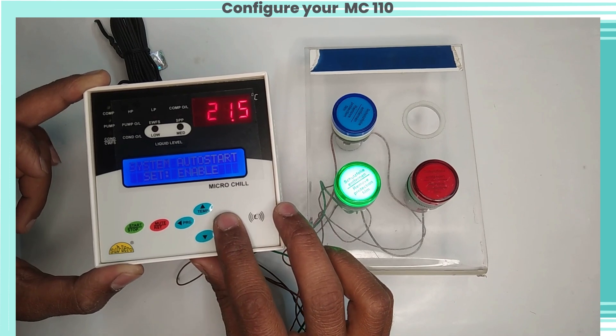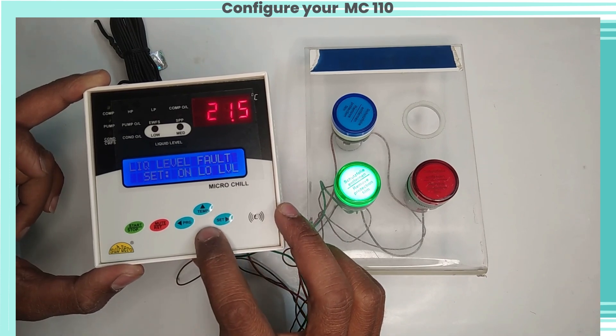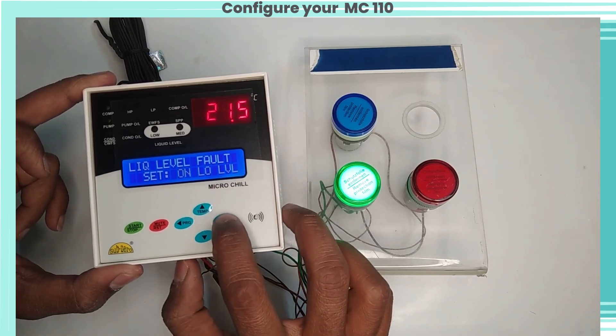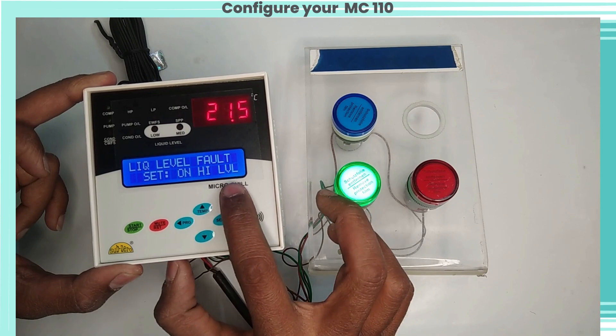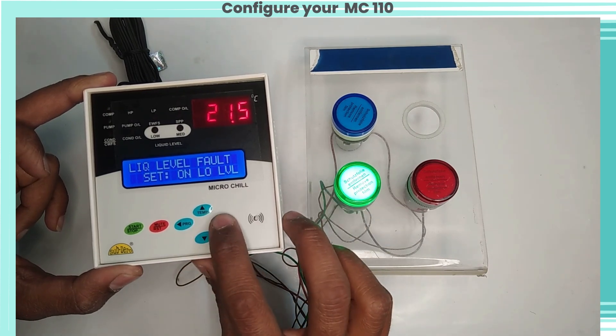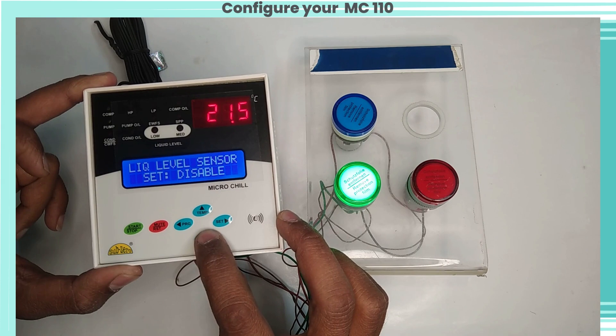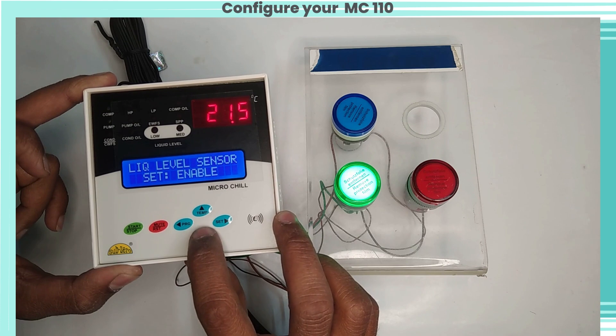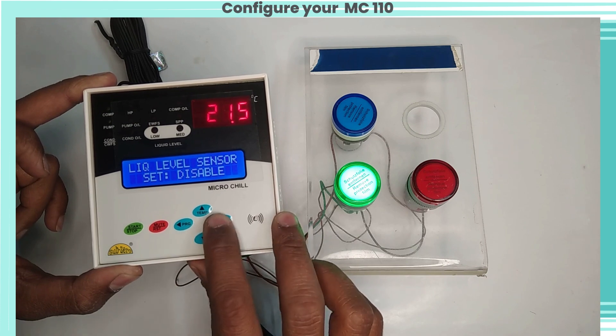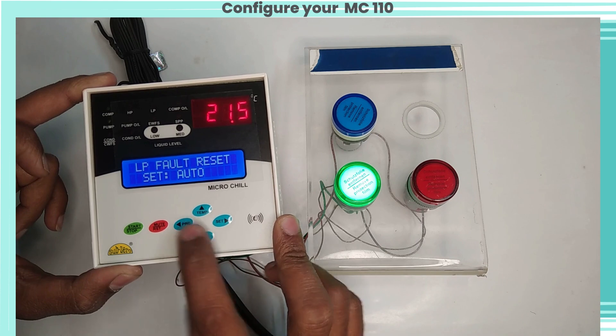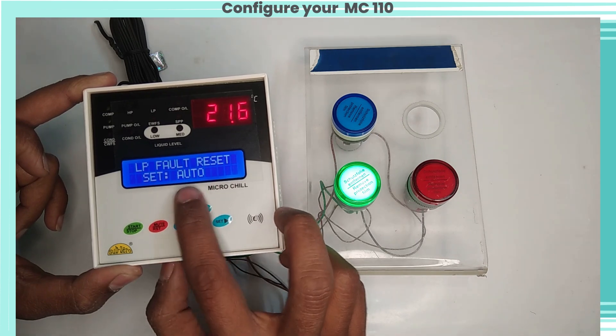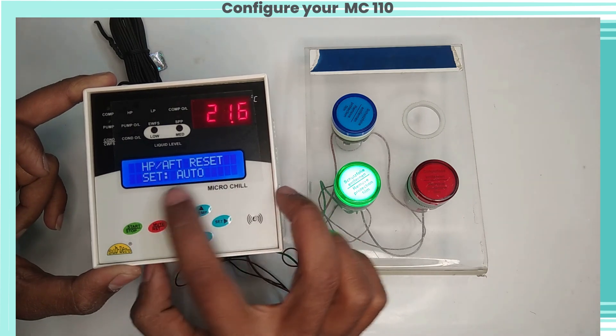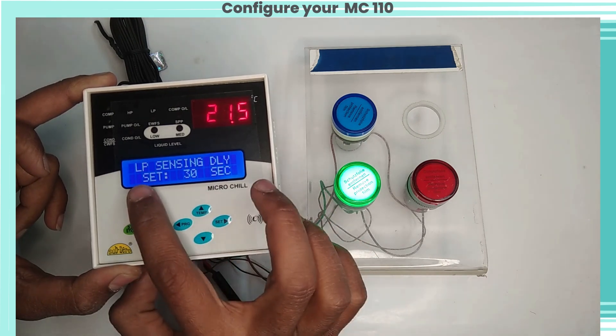Liquid level fault: this parameter is used to set liquid level fault on high level or low level. If set to on high level, this sets level fault on high level. Liquid level sensor: this parameter enables or disables liquid level sensing. ALP fault reset: this parameter will set ALP fault to auto or manual reset. HP AFT reset: this parameter will set HP and AFT fault to auto or manual reset.